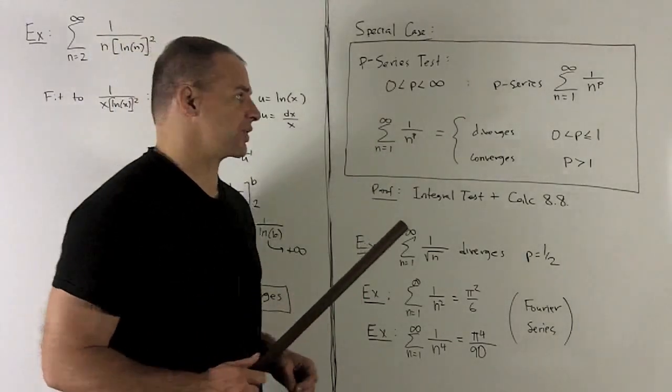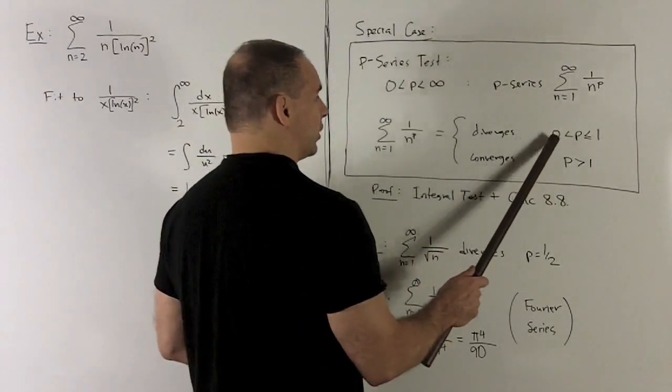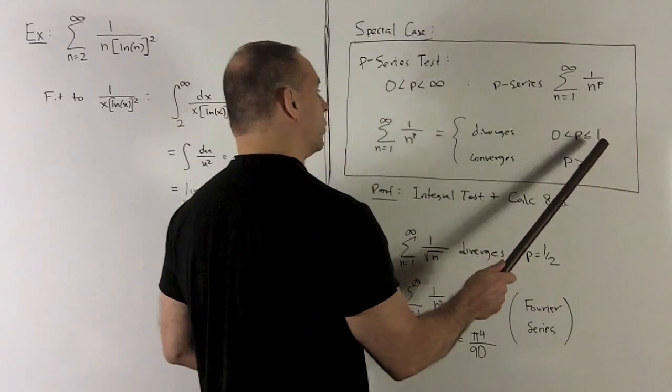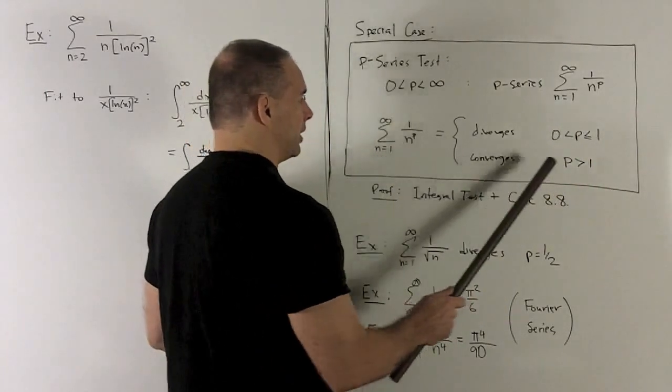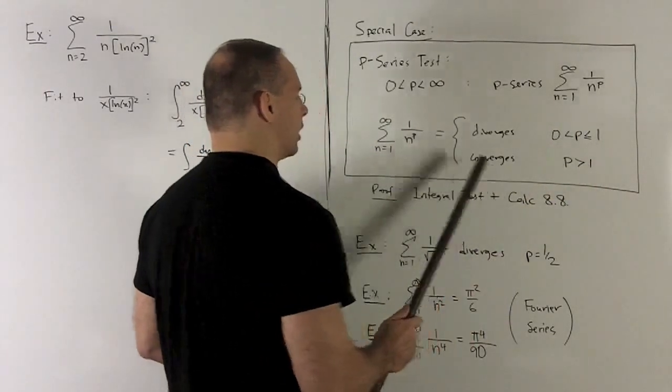We're going to have two cases. When p is between 0 and 1, including 1, my p-series is going to diverge. If p is greater than 1, it's going to converge.